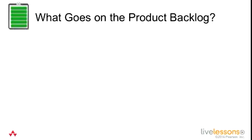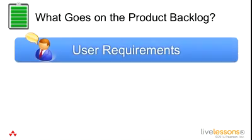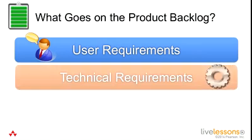So what goes on your product backlog? There are three main categories. You might have user requirements — new features, descriptions of features, or enhancements we want in the product. You can also include technical requirements, things we need infrastructure-wise or platforms we need to develop. You want to keep these to a minimum because they don't provide value to the end user — they provide internal value, but we have to concentrate on the end goal for the user and our clients.